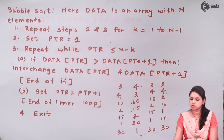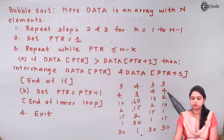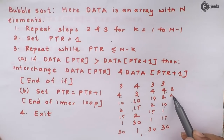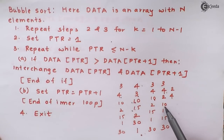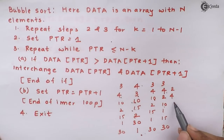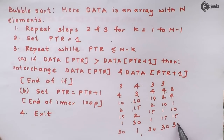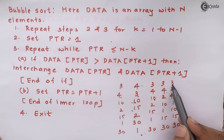Applying the process again for the third pass: 3 and 4, no exchange. 4 and 2 — 2 will go up and 4 will come down. 4 and 10, no exchange. 10 and 1 — 1 will go up and 10 will come down. 10 and 15, no exchange. The rest of the elements remain as they are. The list is still not sorted.